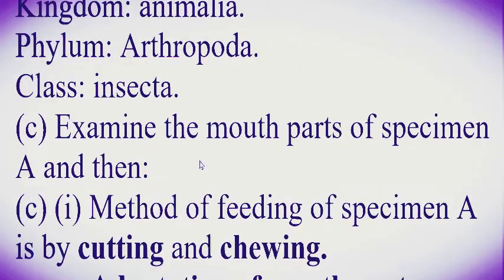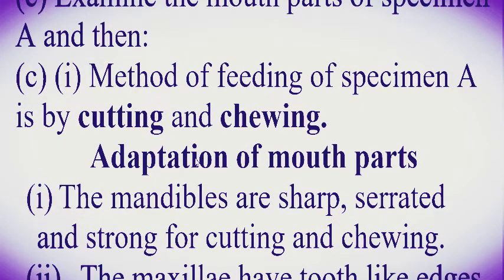Question number three has parts roman one to roman two. Examine the mouth parts of Specimen A. Roman one — the method of feeding of Specimen A is by cutting and chewing. The adaptive feature of mouth parts enables it to cut the food and to chew.